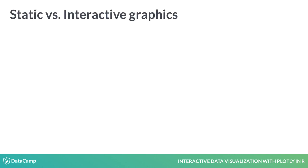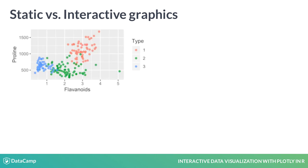Before you start creating graphics, it's important to think carefully about what type of graphic best suits your purpose — a static graphic or an interactive graphic. To highlight features of each type of graphic, let's consider a scatter plot of proline against flavonoids, two chemicals found in wine.